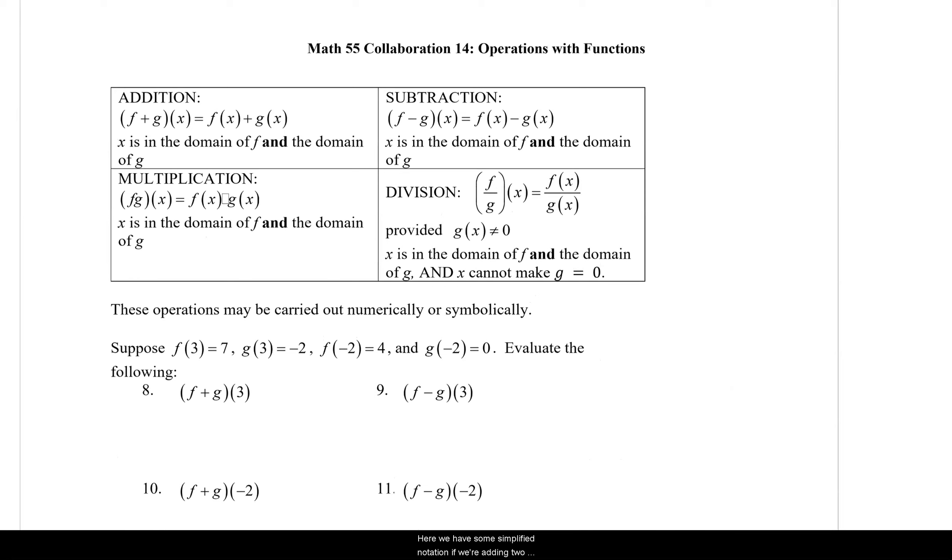Here we have some simplified notation. If we're adding two functions together, we add them together. It may seem a little silly, this redundancy, but the first notation is the name of the function and the second part is how we get it. And so hopefully that will help clear some things out. One little mistake I need to correct on mine. This is f(x) times g(x). For some reason, the PDF didn't convert my dot into a dot. It made it a rectangle.